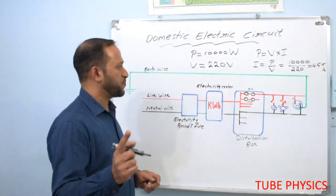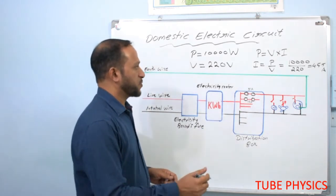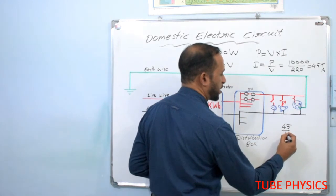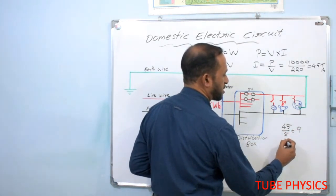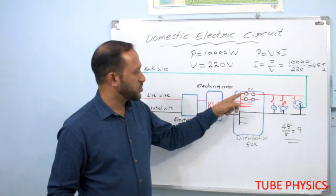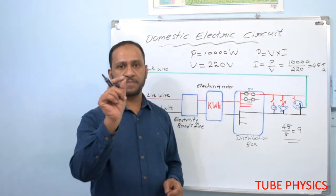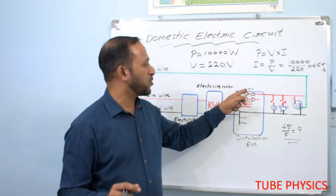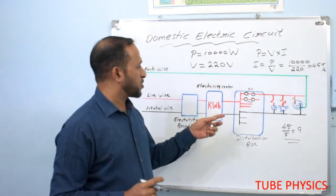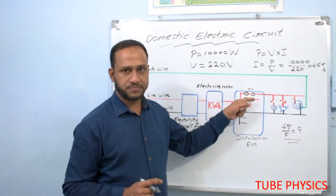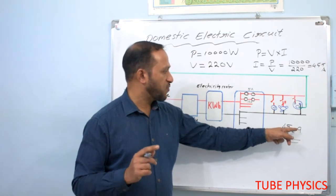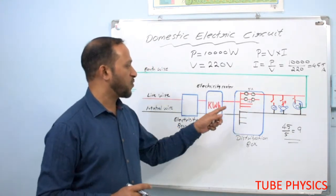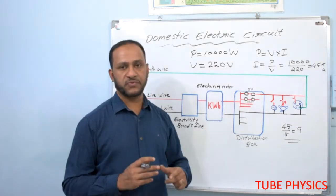The main wire up to the distribution box should be a special wire able to carry 45 ampere of current. Now we can calculate how many branches are needed. We know that in normal wiring the maximum current is 5 ampere per line. Here we have 45 ampere total, so 45 divided by 5 equals 9 branches required. In the distribution box, divide the live wire into 9 branches, each with a fuse wire or circuit breaker that will burn or trip if current exceeds 5 ampere. You can also connect one 15 ampere line for high power devices, making 6 branches of 5 ampere and one branch of 15 ampere.